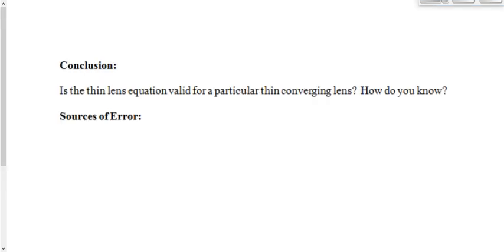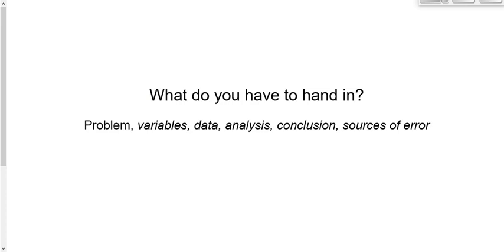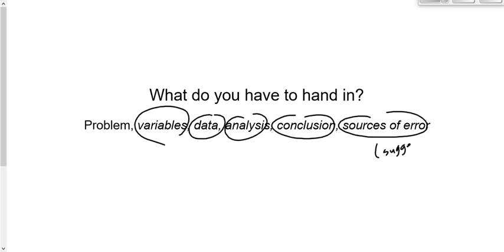Then, of course, you need your conclusion. Is it valid? How do you know, and your sources of error? We always want to have usually three good sources of error plus suggestions for improvement. But sometimes we let you get away with two good sources if they're really good. Ultimately, what do you got to hand in? Your problem, which I already gave you. Your variables, which I pretty much already gave you. Your data, your analysis, your conclusion, and then your sources of error, which includes your suggestions for improvement.